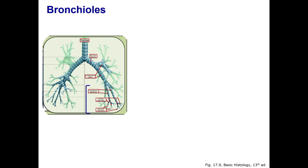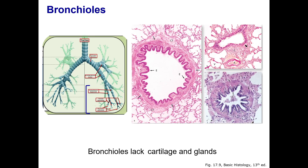Tertiary bronchi of the bronchopulmonary segments give rise to smaller and smaller bronchi, whose terminal branches are called bronchioles. Bronchioles are the intralobular airways with diameters of 1 mm or less. Cartilage decreases until it disappears — this is an easy way to distinguish a large bronchiole from a small bronchus: look for the absence of cartilage plates. The smooth muscle increases relative to the diameter of the lumen. Bronchioles also lack glands, and the epithelium largely lacks goblet cells. The epithelium decreases in height and complexity to become ciliated simple columnar, or simply cuboidal in the smallest terminal bronchioles.